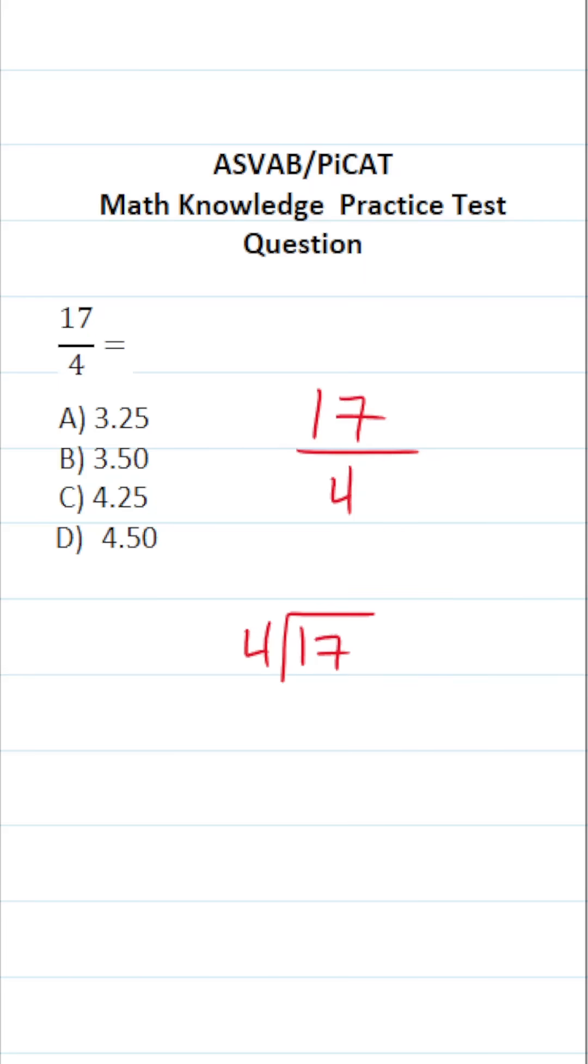And that's what we're going to do to make this into a decimal. We start by asking ourselves, how many times does 4 go into 17 without going over? That's going to be 4 times, given that 4 times 4 is 16. 17 minus 16 is 1.